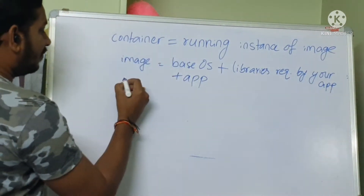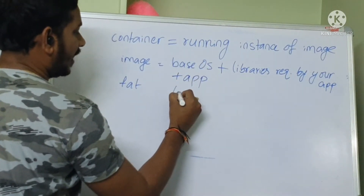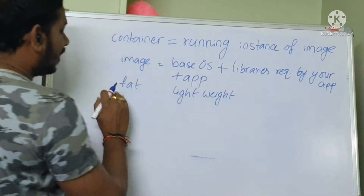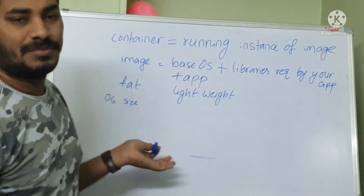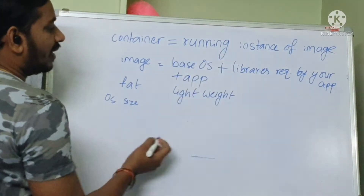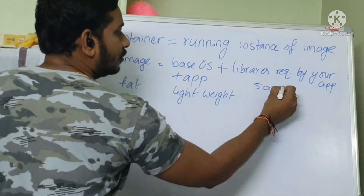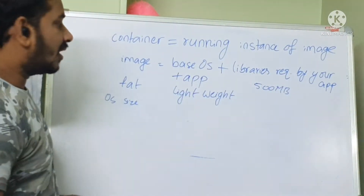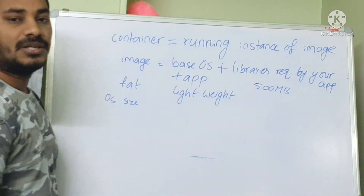We can say a VM is like fat but a container is lightweight. In a VM, the OS size is large and there are a lot of packages and libraries — running in gigabytes. But a container image can be made around 500 MB, including your application, so it is very easy to spin up. This is the advantage of containers — performance is also increased because there are very few call layers inside it.